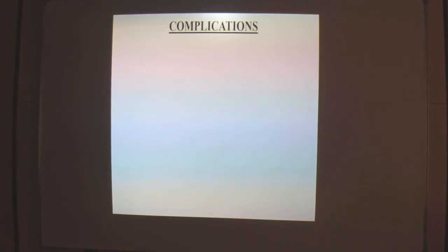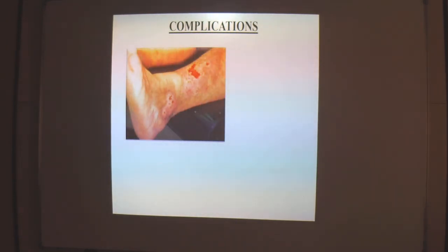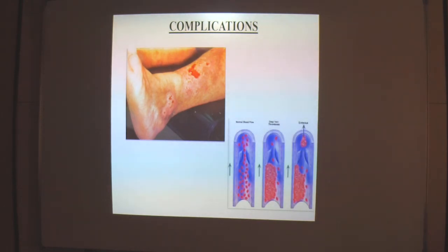Complications of varicosities include: first, varicose ulcer — the skin over varicose veins becomes weak, and even a minor injury may cause bleeding, which does not heal, leading to chronic varicose ulcer. Second, thrombophlebitis — thrombus from superficial veins is carried to the deeper veins, then through the heart to the pulmonary artery. If the pulmonary thrombus is smaller, there are no symptoms, but if it is larger, it may lead to sudden death from pulmonary embolism.